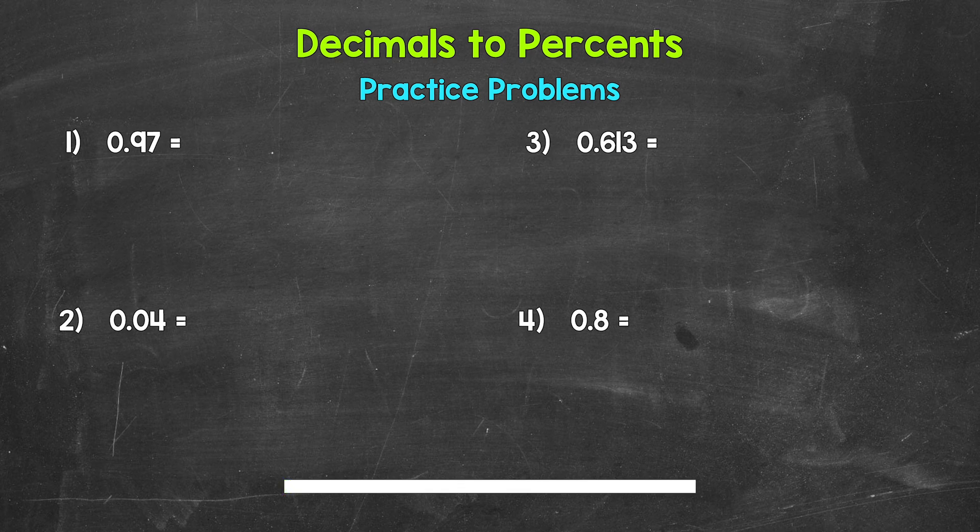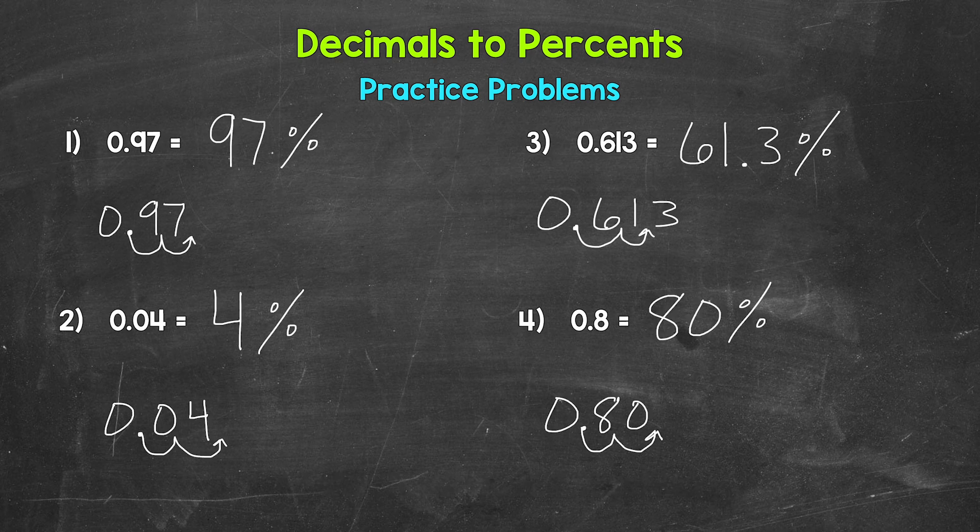Okay, so that was four minutes. Let's go over the answers. Here are our answers. For number one, we have 97%. For number two, 4%. For number three, 61.3%. And lastly, for number four, 80%.